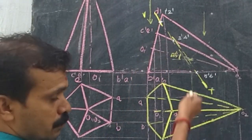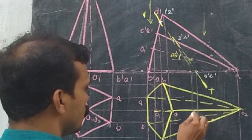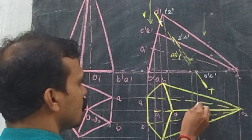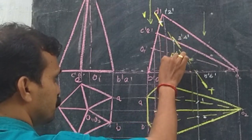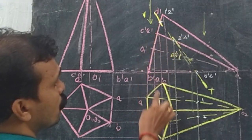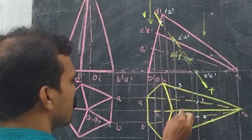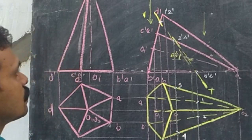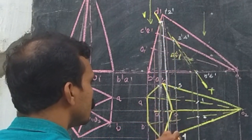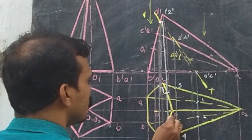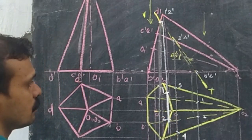Transfer all these points to the corresponding front view — transfer 5 and 6 in O2A and O2B. Then transfer points 3 and 4 belonging to O2C and O2E (O2-dash C-dash and O2-dash E-dash). Similarly, on the base edge, transfer to get points 1 and 2. So we obtain the intersection like this.